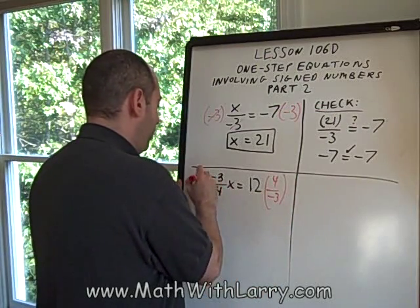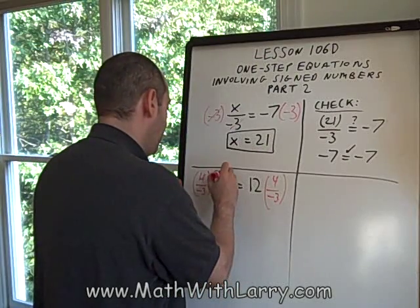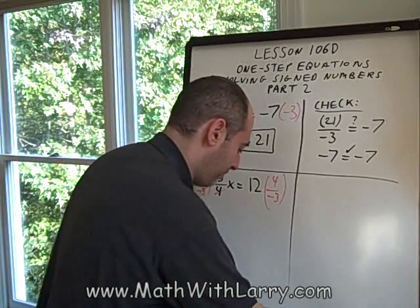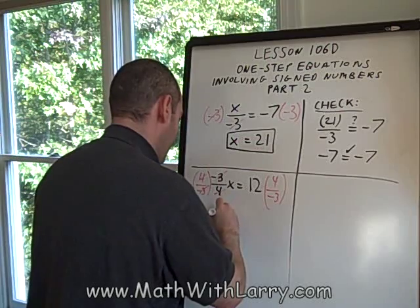Remember what happens over here. 4 over 4 cancels because it equals 1. Negative 3 divided by negative 3 equals 1. A negative divided by negative is a positive. So we have 1x on the left, which we can just write as x.